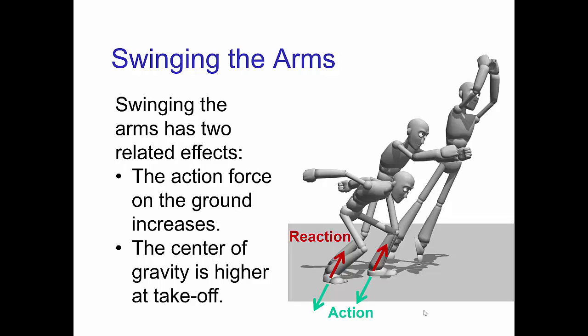Now swinging of the arms has two related effects. First, by swinging the arms upward, you exert more force on the ground and so there's a larger reaction force pushing you upward. Second, at takeoff your center of gravity is higher off the ground. This is because your center of gravity shifts upward within your torso when your arms are raised.